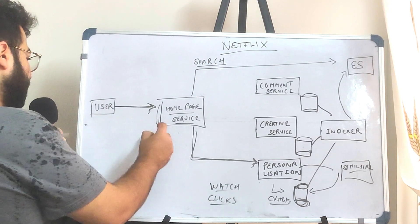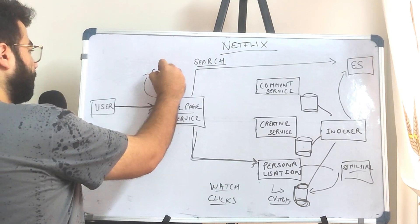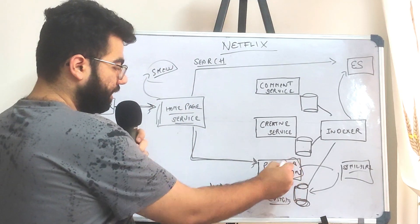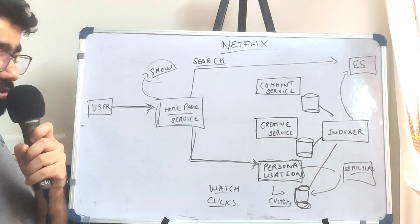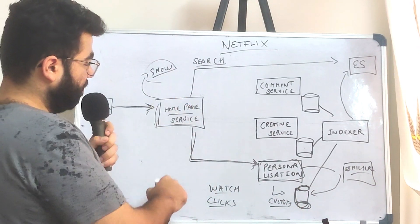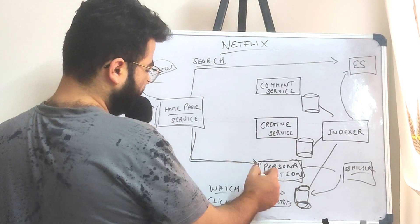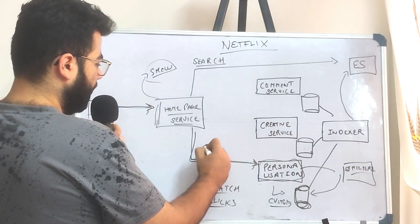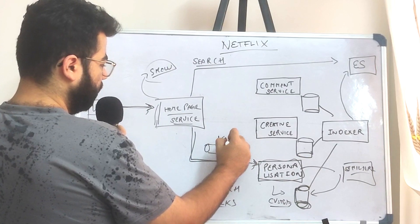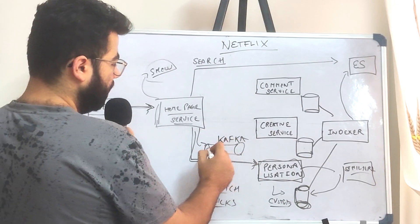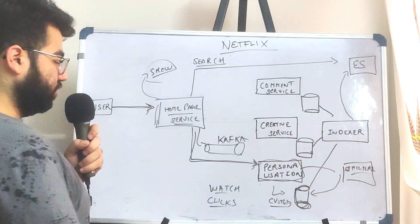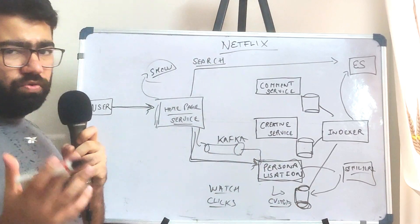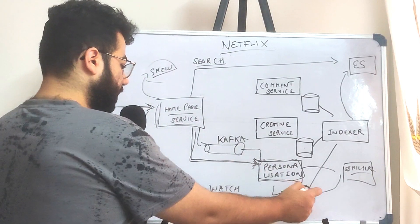When you click on a particular show title and come back to the home page, your personalization would have to be updated. But every time you click on a show, you don't keep calling the personalization service again and again. Netflix uses Kafka for this. Any event that you make — for example, clicking on a particular show — is pushed into Kafka, and these events are then processed by the personalization service to calculate similarity and update your recommendations in the database.